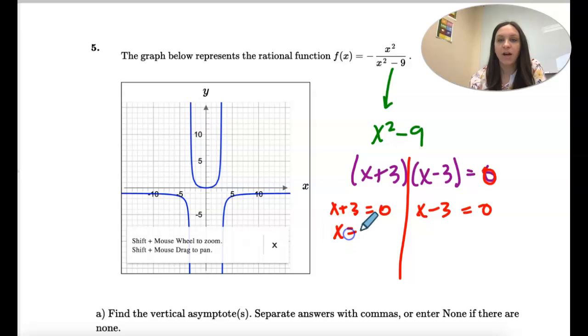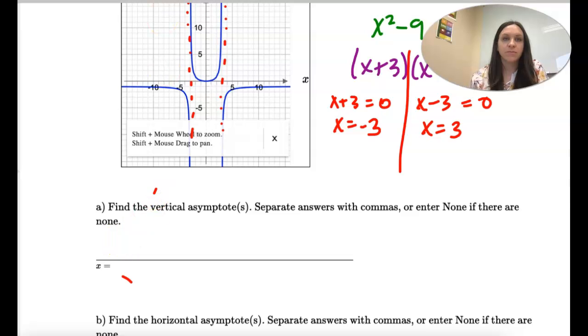You can actually see from the graph, they're negative 3 and positive 3. But if you weren't sure, you can solve the denominator. So x equals 3, negative 3.